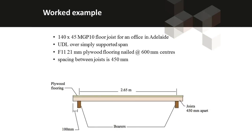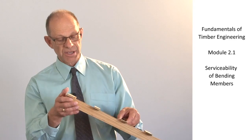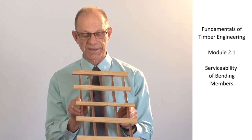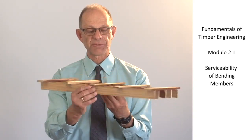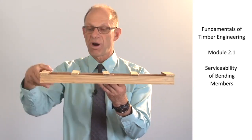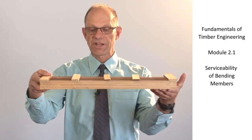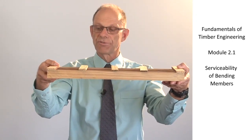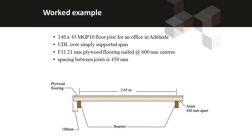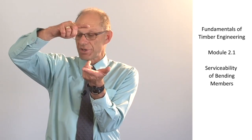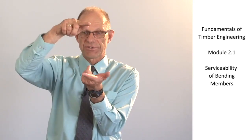We'll illustrate it with a worked example of a floor system. A floor system makes use of a number of floor joists. Here is a model showing a large number of floor joists working together — as an out-of-plane load is applied to the floor, each of the floor joists cooperates in resisting that load so that the deflection of the floor system is given by the performance of all the floor joists together. The average modulus of elasticity is appropriate to use. We're using MGP10 timber, which has a modulus of elasticity of 10,000 megapascals, with a span of about 2.65 metres and floor joists of 140 by 45 millimetres.